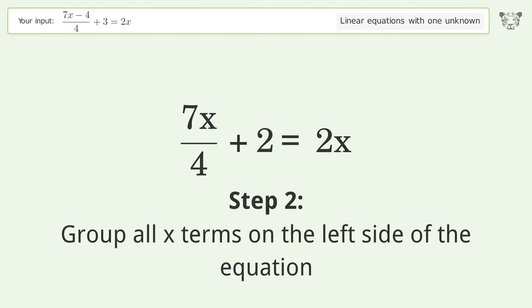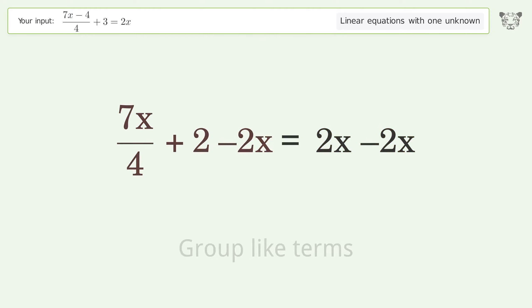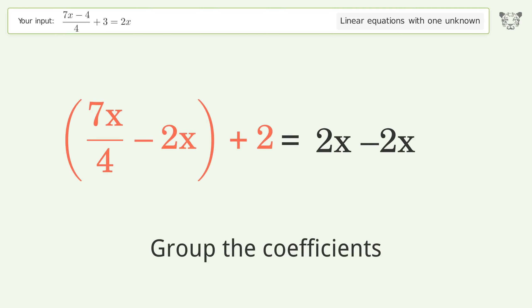Group all x terms on the left side of the equation. Subtract 2x from both sides. Group like terms. Group the coefficients.